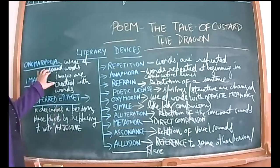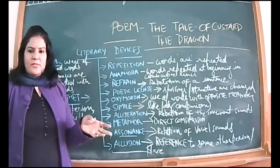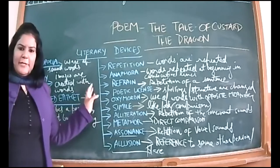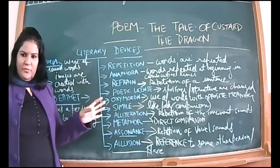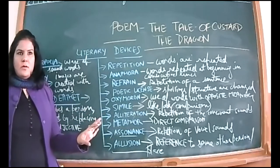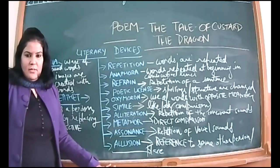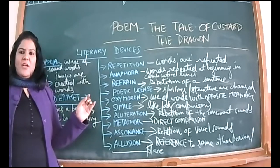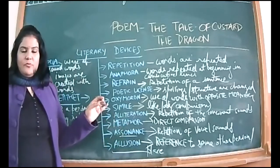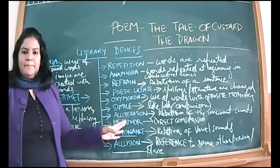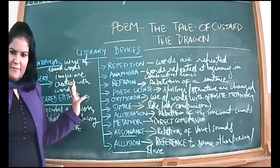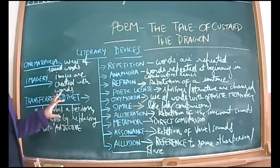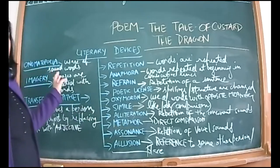Onomatopoeia is the usage of sound words. When the actual word and the sound it produces are the same — like 'bees buzz,' the buzzing sound is what bees actually make. 'Snake hiss' — the word hiss and the real sound a snake produces are the same. 'Dog woof' — that is also an example of onomatopoeia. Usage of sound words that match the actual sound produced.